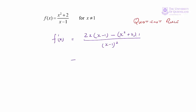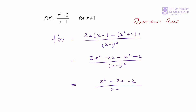We can expand the numerator. We'll have 2x squared minus 2x minus x squared minus 2, all over x minus 1 squared. Next we simplify the numerator, so we'll have x squared minus 2x minus 2, all over x minus 1 squared.